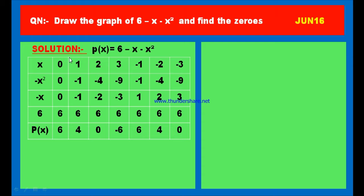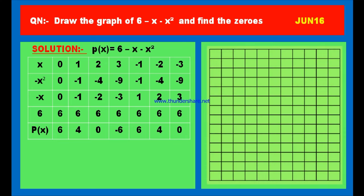The points are: (0, 6), (1, 4), (2, 0), (3, minus 6), (minus 1, 6), (minus 2, 4), and (minus 3, 0). Now let us plot these points on the graph sheet. The x-axis is the horizontal line of reference with scale 1 cm equals 1 unit. The y-axis is the vertical line of reference with scale 1 cm equals 1 unit. Both axes meet at the origin.